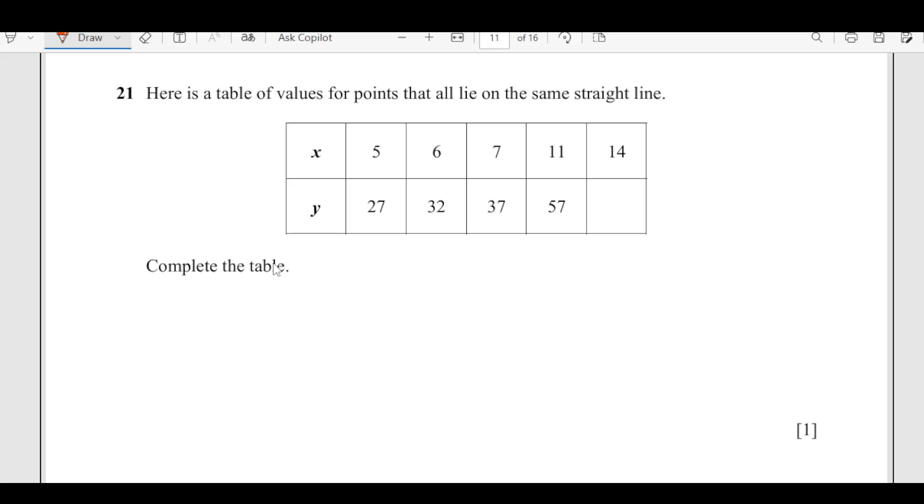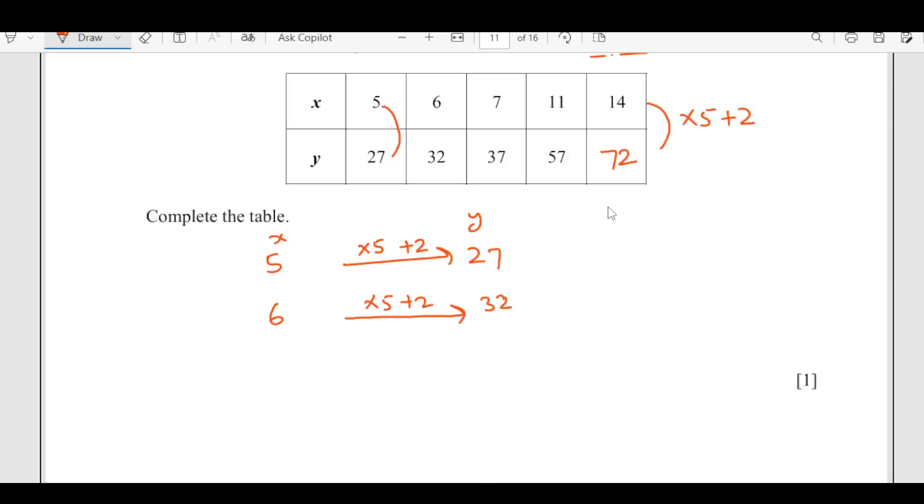Question 21, here is a table of values for points that all lie in the same straight line. Complete the table, we are looking for this one. If I observe, 5 times 5 is 25 plus 2, that's 27. Then we have 6, 6 times 5 is 30 plus 2 equals 32. So it is working this way. That means we are going to multiply here by 5, which is 70 plus 2, 72. Trial and error method.